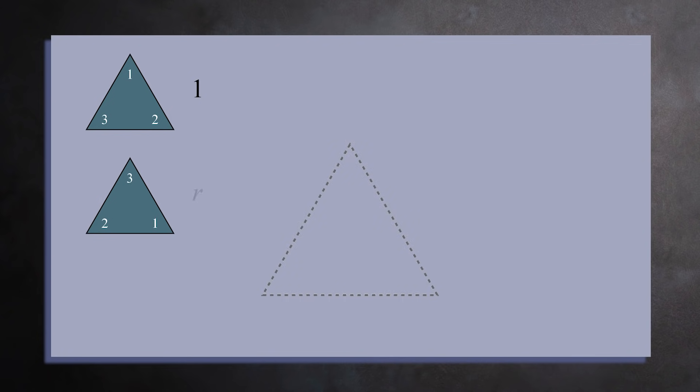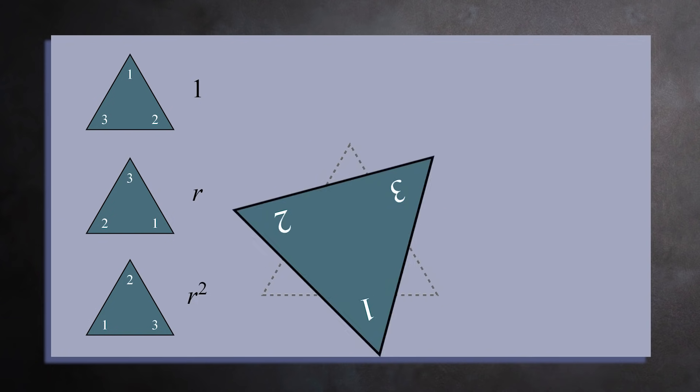We'll call this transformation r for rotation. If you perform two such rotations, you get two, three, one. We call this transformation r squared, since we applied r twice. And if you do three rotations, you return to the starting position, one, two, three. This means that r cubed equals one.